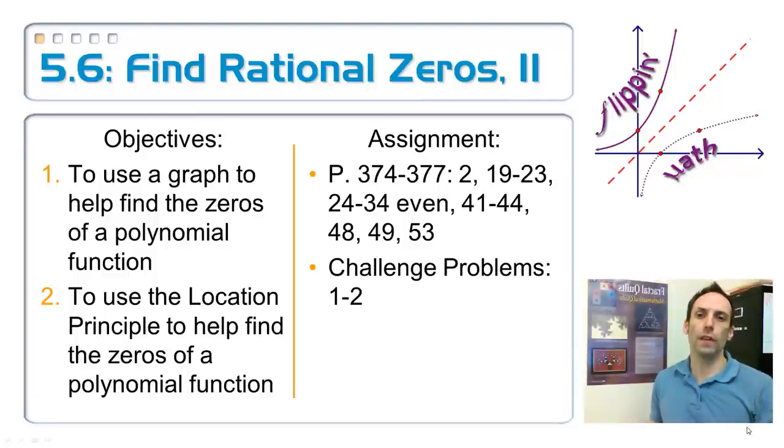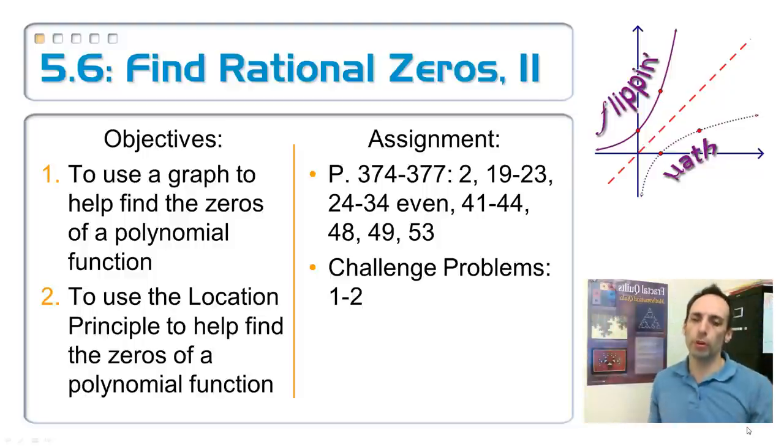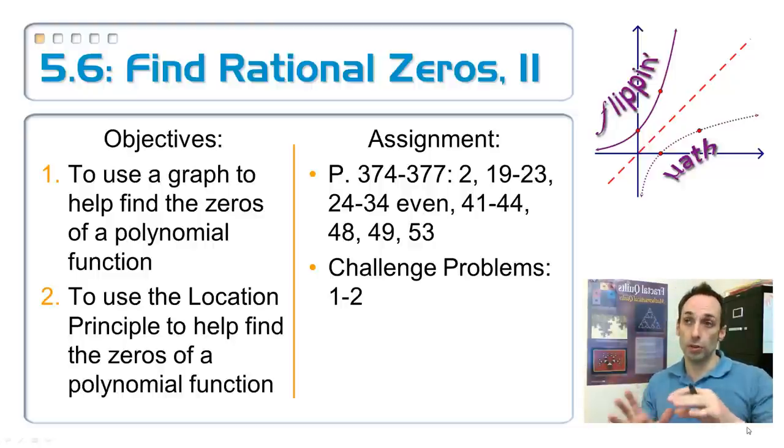All right, here's the second part of 5.6. It was so vast I had to break it up into two parts. So in the previous part, we were learning how to find zeros of polynomial equations, and we used this thing called the rational zero theorem.